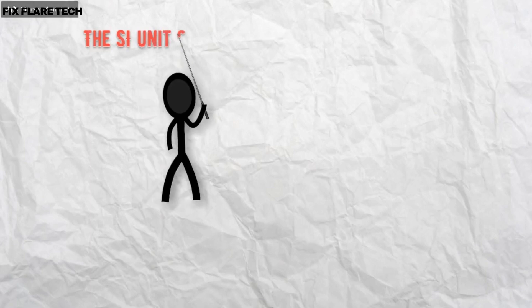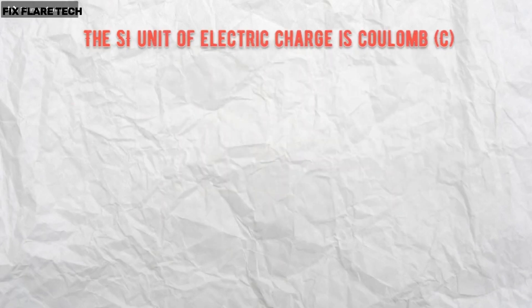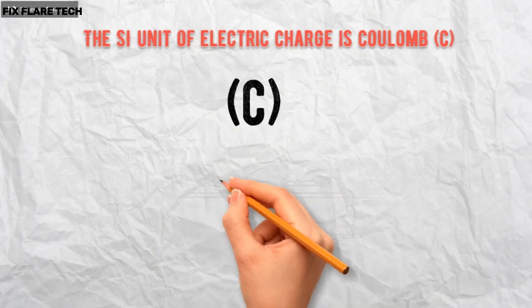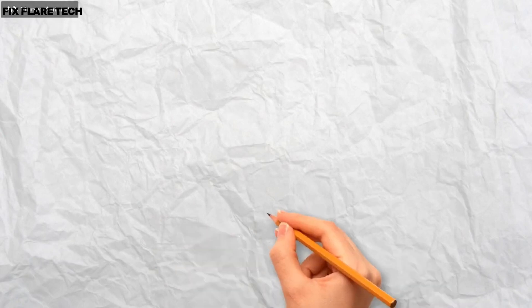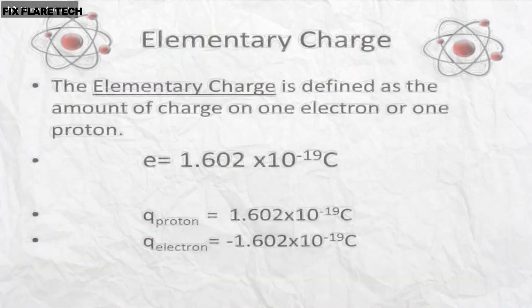The SI unit of electric charge is Coulomb (C), which is equivalent to the charge contained in nearly 6 × 10^18 electrons. We know that an electron possesses a negative charge of 1.6 × 10^-19 C.